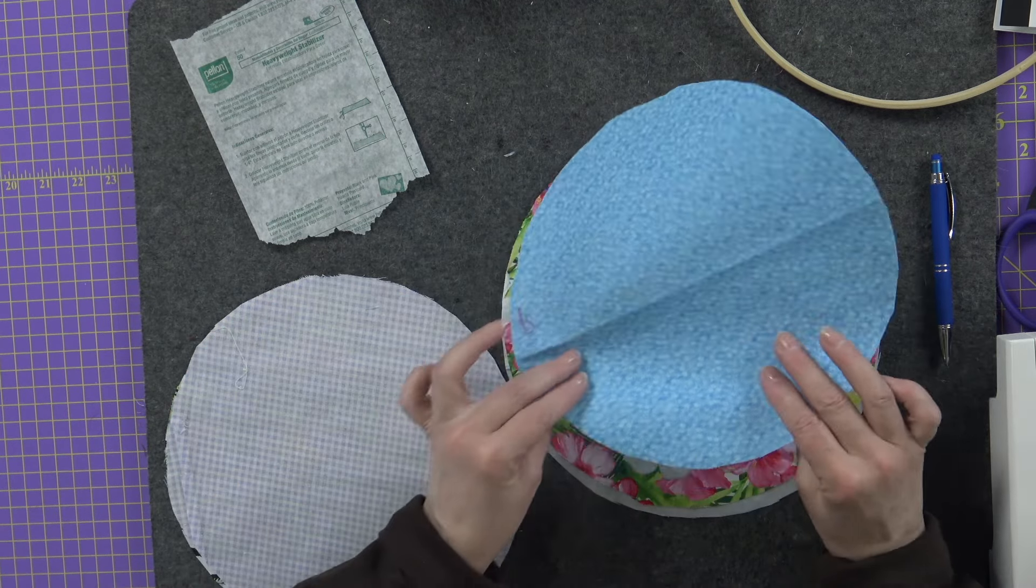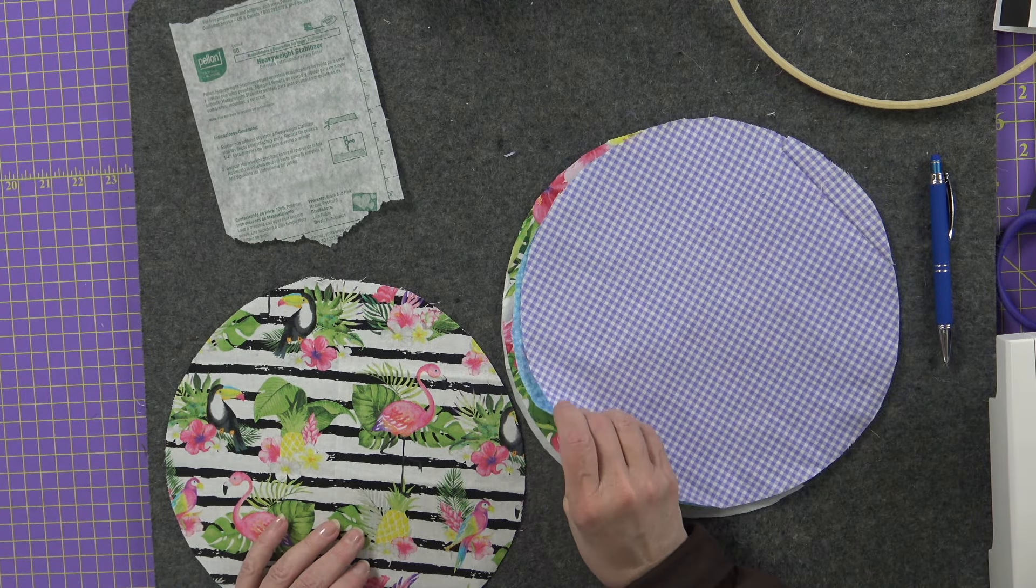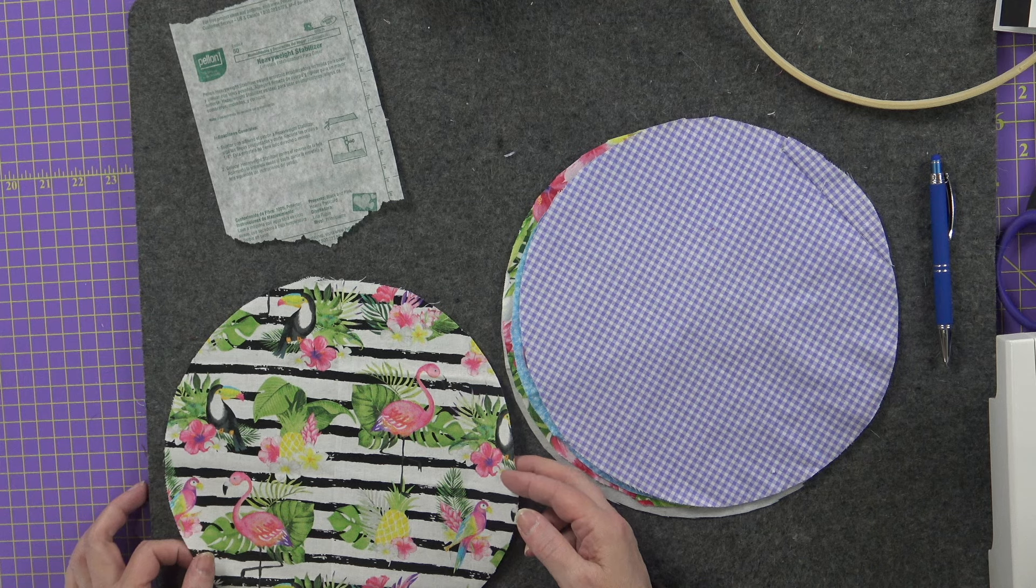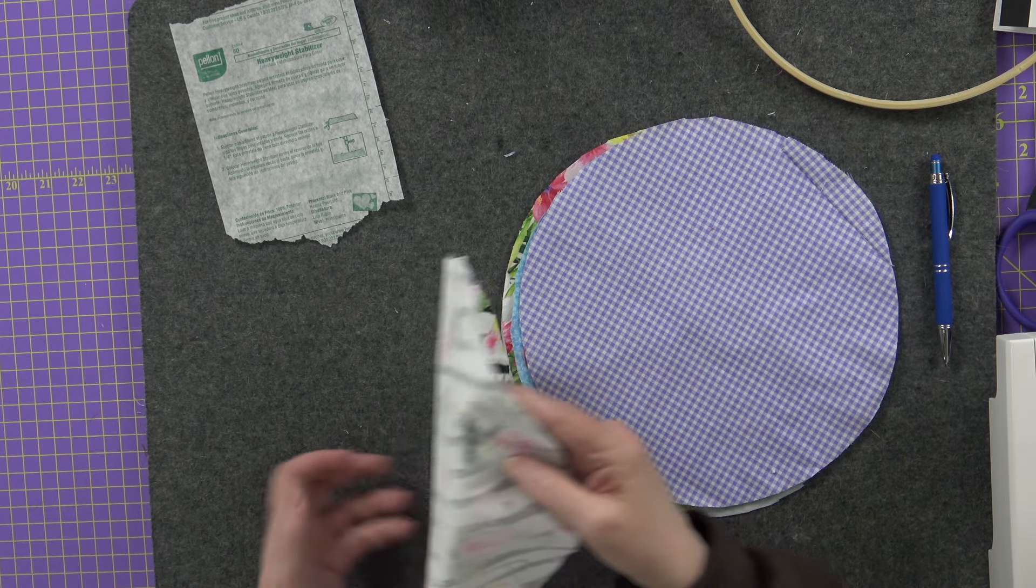And then once you get your pieces, you're going to have one for stabilizer. And I did piece this one. I monstered it together. Who's going to see it? It doesn't matter. I've got some beautiful floral here, a lovely blue, some checkered purple. And again, I put a little patchwork up on here. And then some cute little flamingos and some toucans with some pineapple.